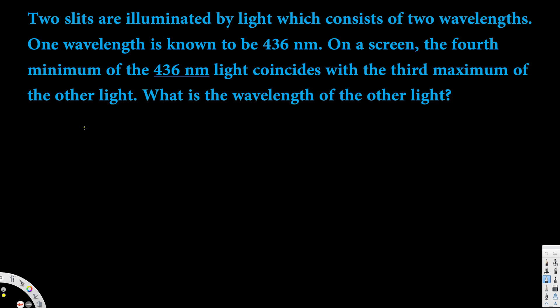Let's look at this problem. This question asks: two slits are illuminated by light consisting of two wavelengths. One wavelength is known to be 436 nanometers. On a screen, the fourth minimum of the 436 nanometer light coincides with the third maximum of the other light. What is the wavelength of the other light?